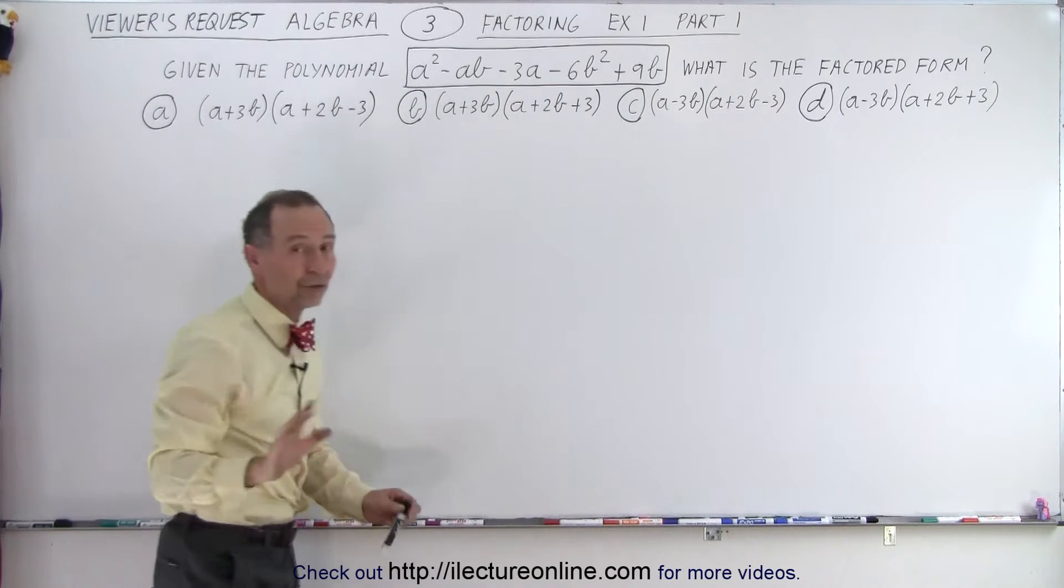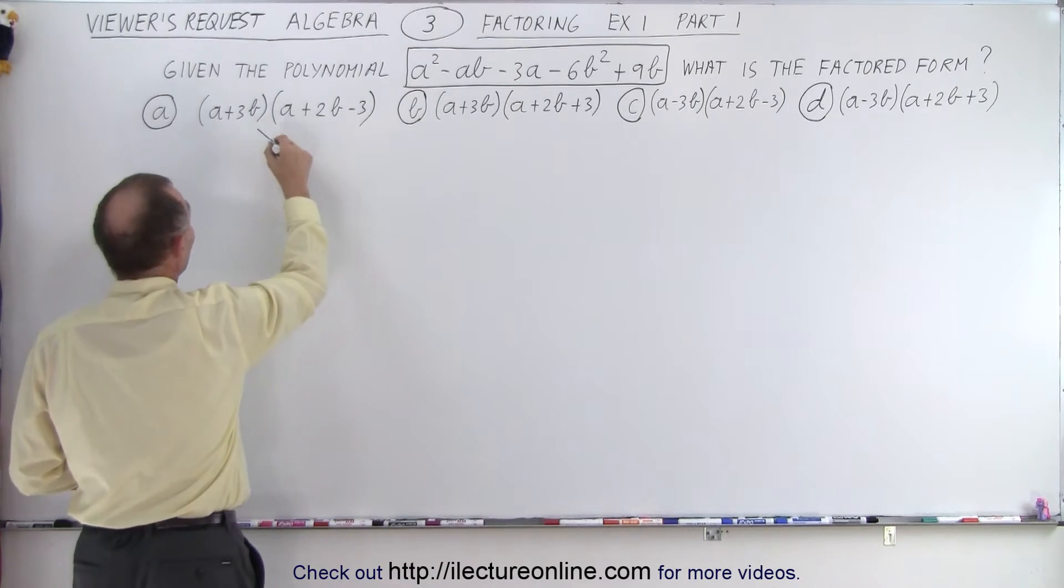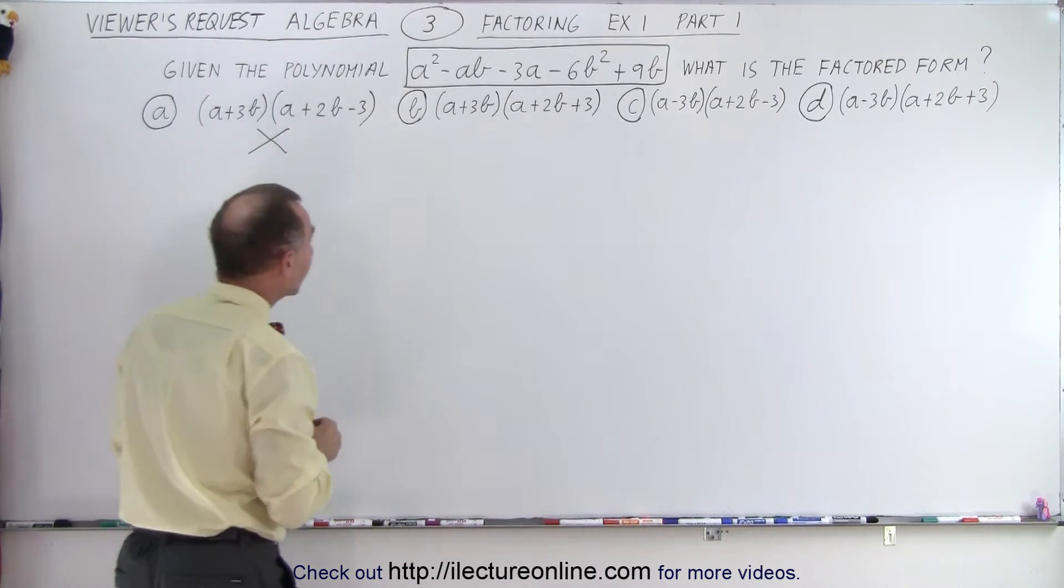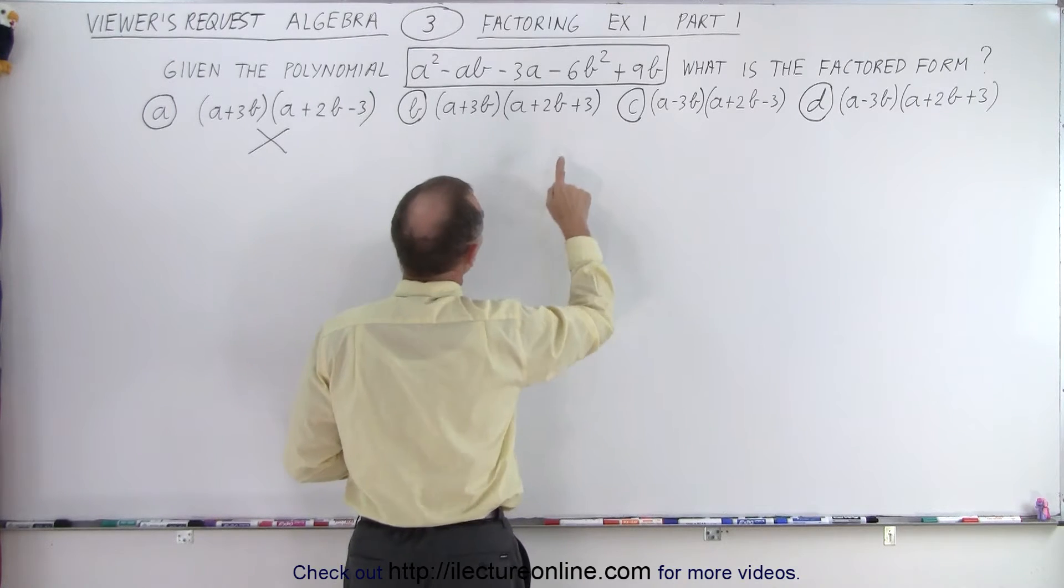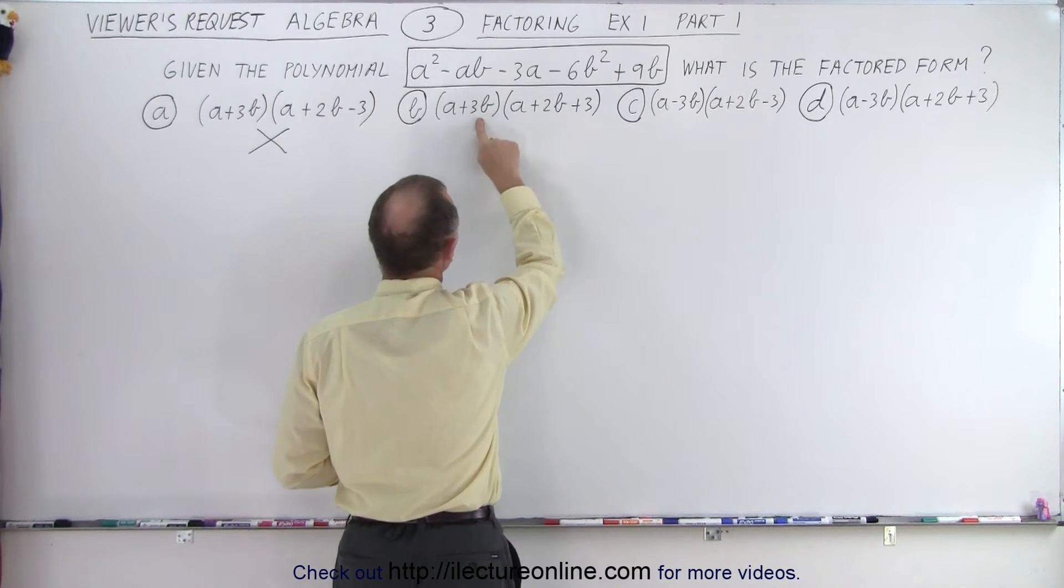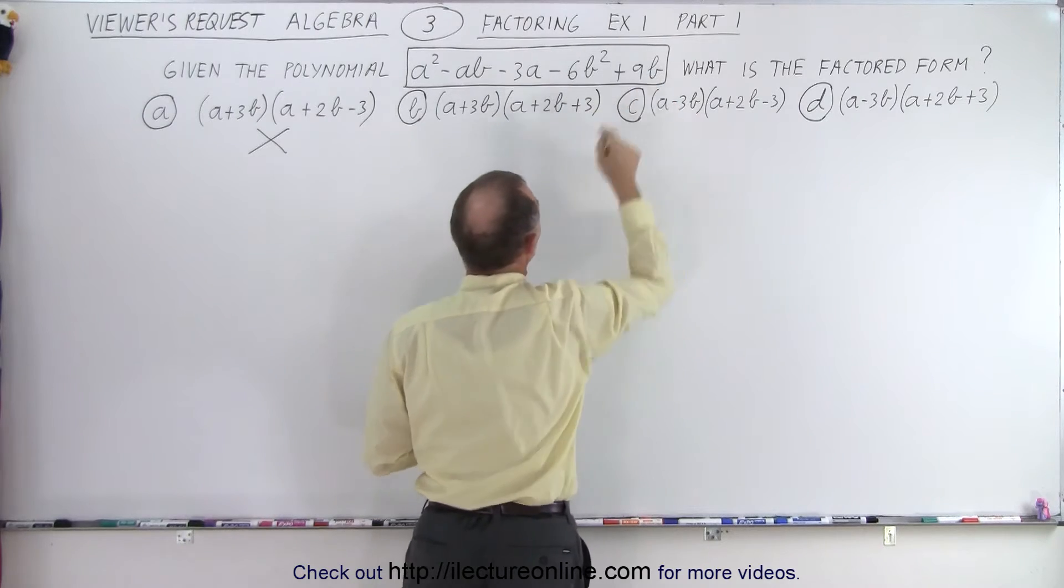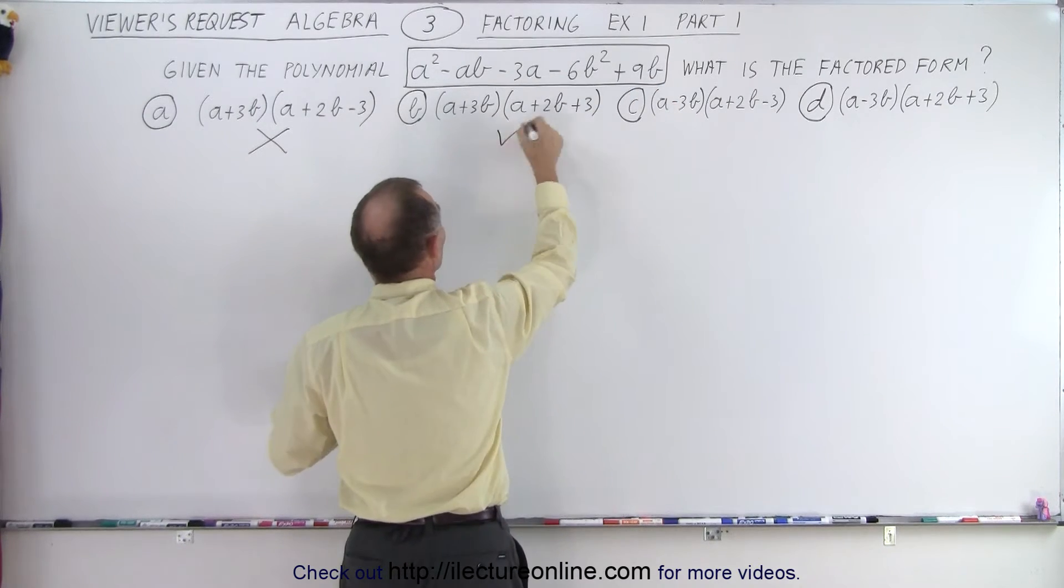So that means this is not a possible solution. Here we multiply a 3 times a positive 3b, I get a positive 9b which is what I have here, so B is a possible solution.